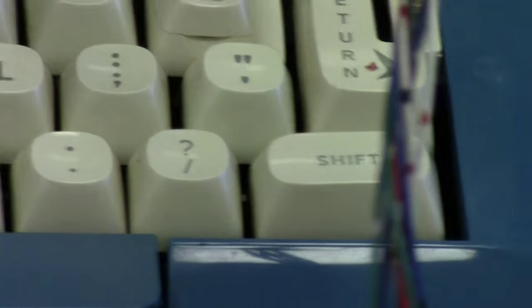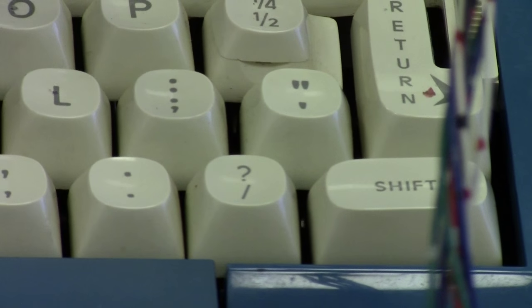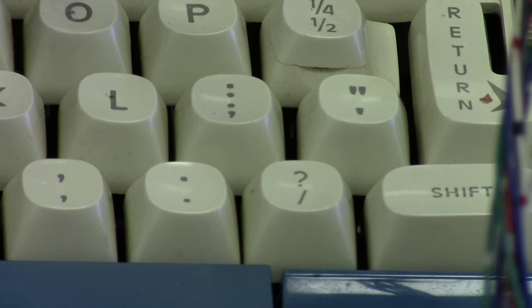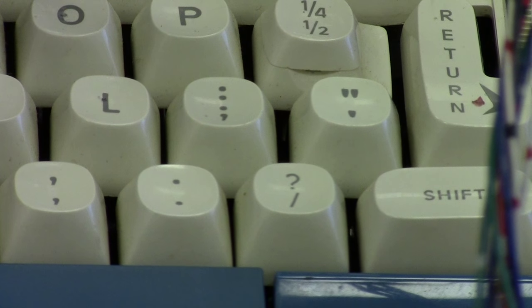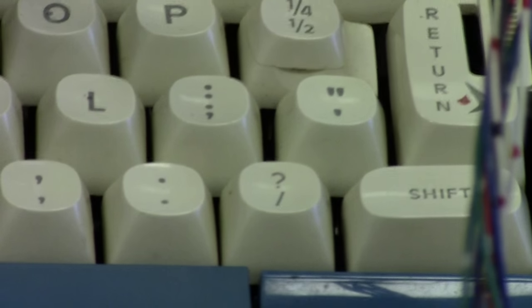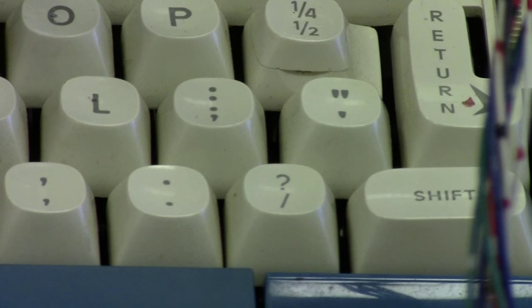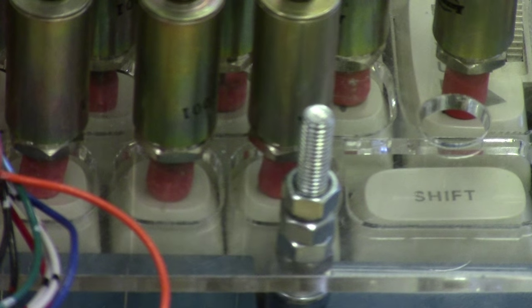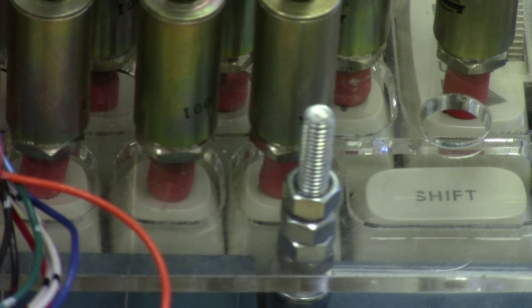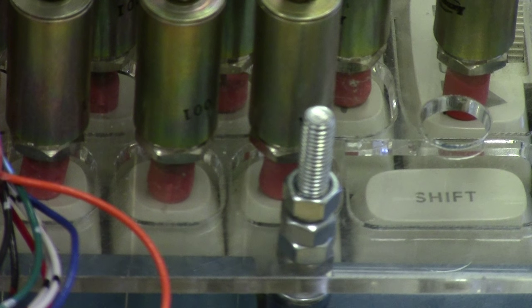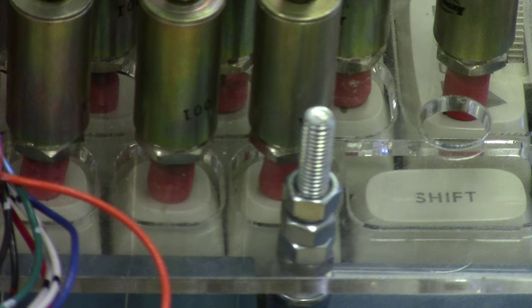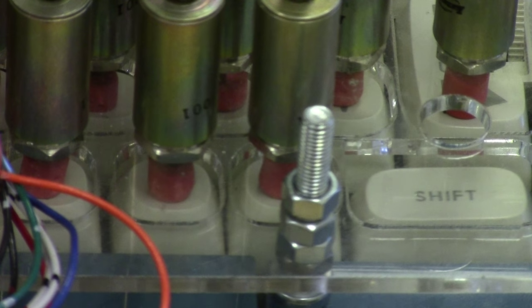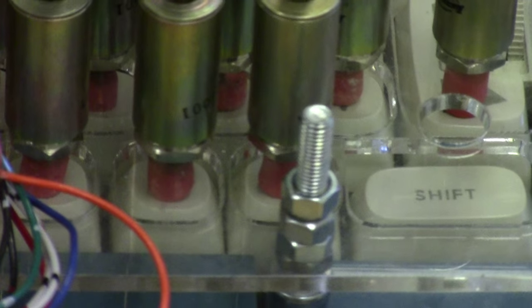but the way you type an exclamation point on these typewriters is you first type an apostrophe, then you type a backspace, and then you type a period. Okay, let me demonstrate that for you. I'll type a bunch of exclamation points here. You kind of see that.